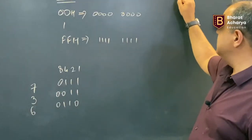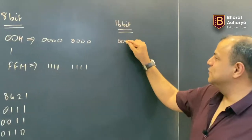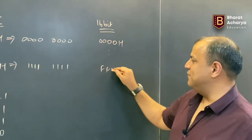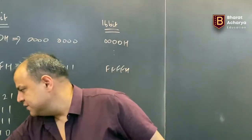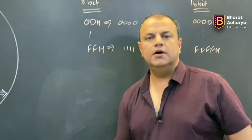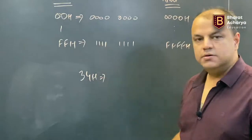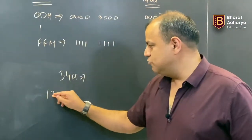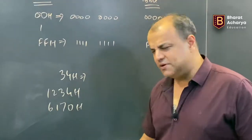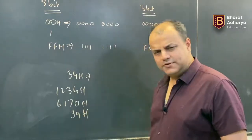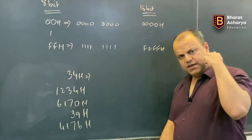A 16-bit number goes from 0000 up to FFFF. In binary, that's 16 zeros up to 16 ones. Quick exercise: 34 is an 8-bit number; 6170 is a 16-bit number; 39 is an 8-bit number; 4176 is a 16-bit number.